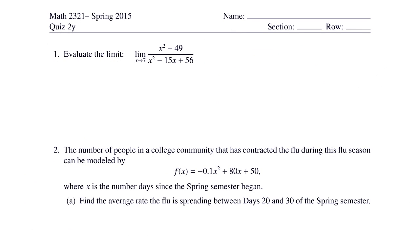Let's look at the answers to quiz 2y. We have a limit as x goes to 7. So if you try to evaluate this, you get 0 over 0.